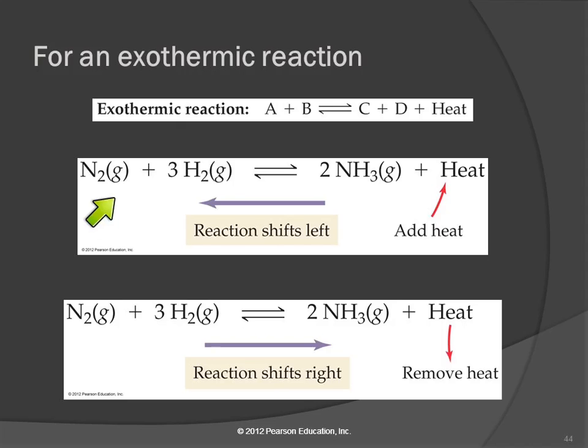So here's a specific example. Nitrogen plus hydrogen forms ammonia and gives off heat. This is an exothermic reaction. So if we add heat, the reaction shifts to the left. If we remove heat, if we cool it down, the reaction will shift to the right.